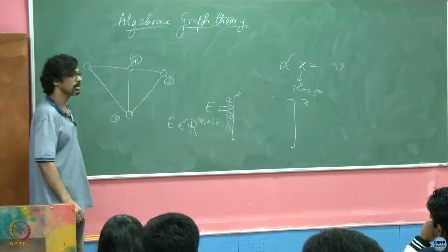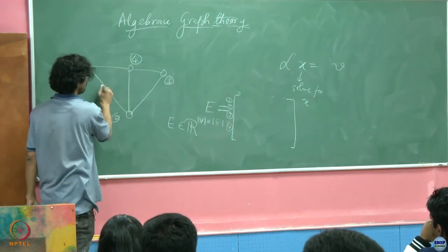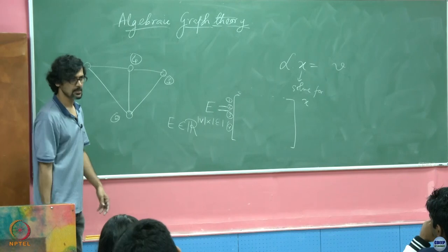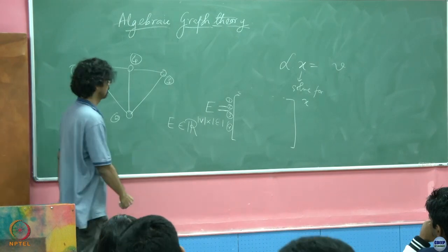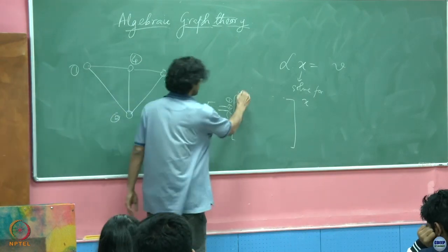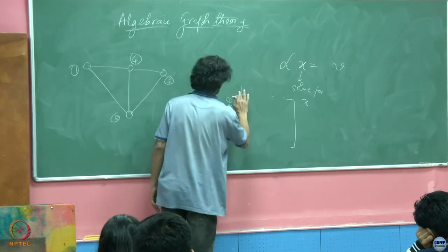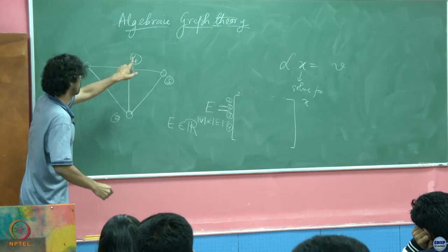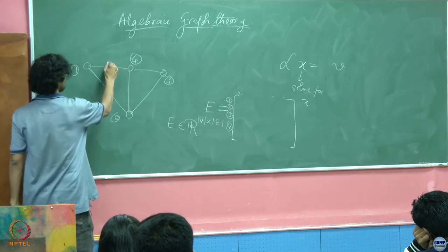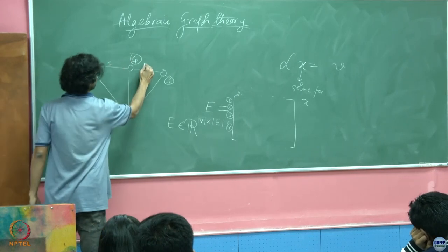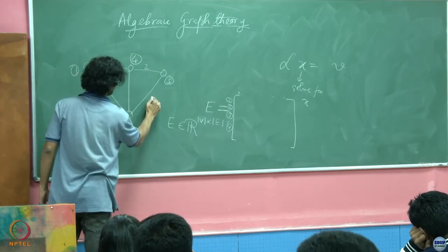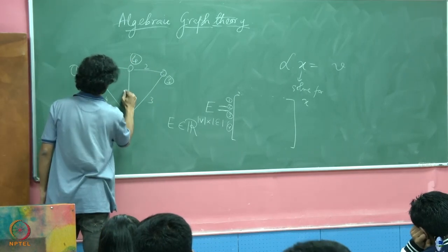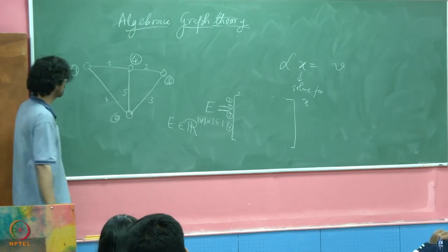There are 5 edges in this graph, so I will have 5 columns, labeled 1 through 5.